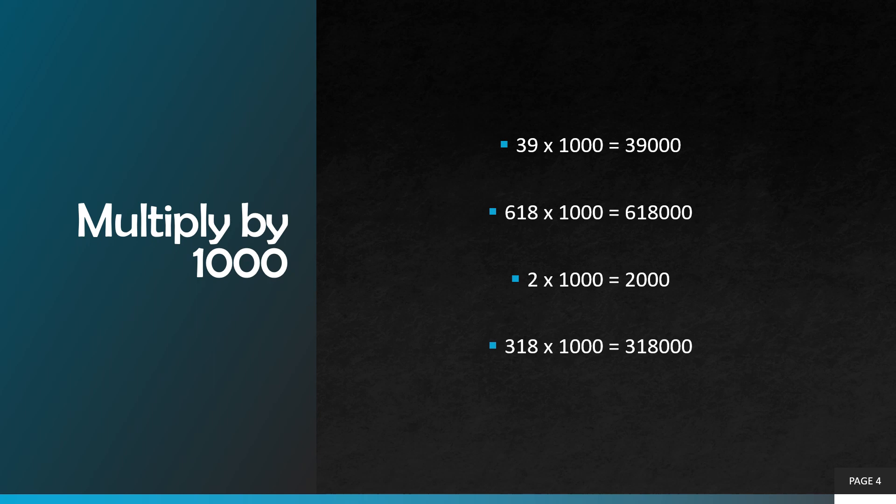Multiplied by one thousand. Thirty nine multiplied by one thousand — we are going to add three zeros in the answer. Thirty nine multiplied by one is equal to thirty nine, so our correct answer will be thirty nine thousand.